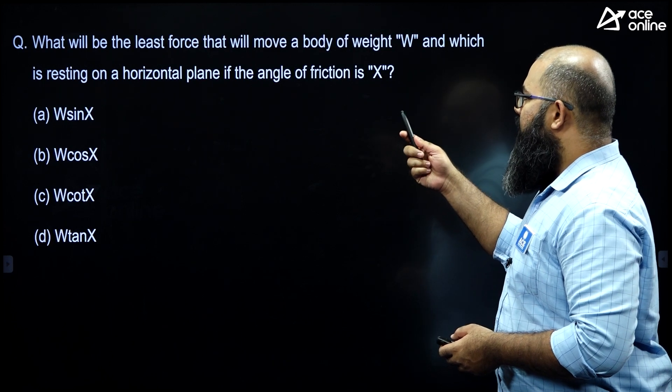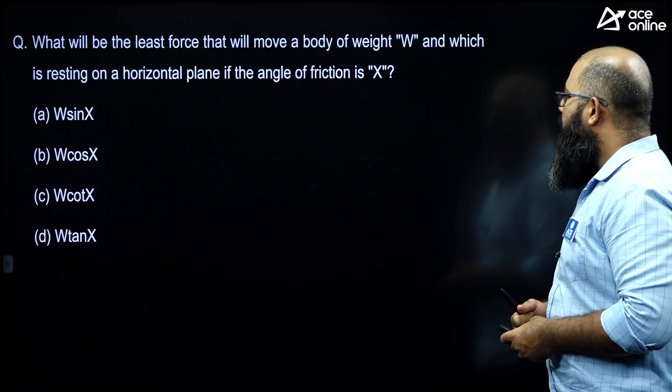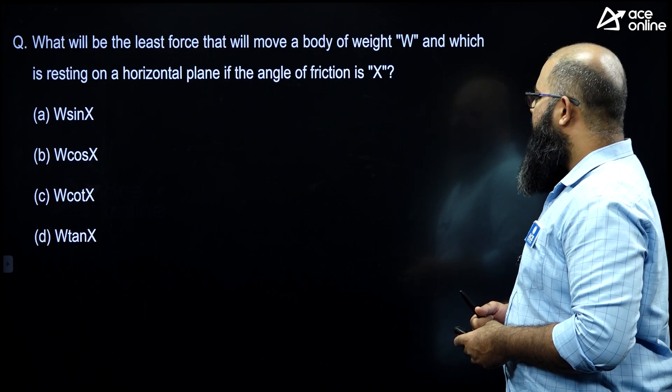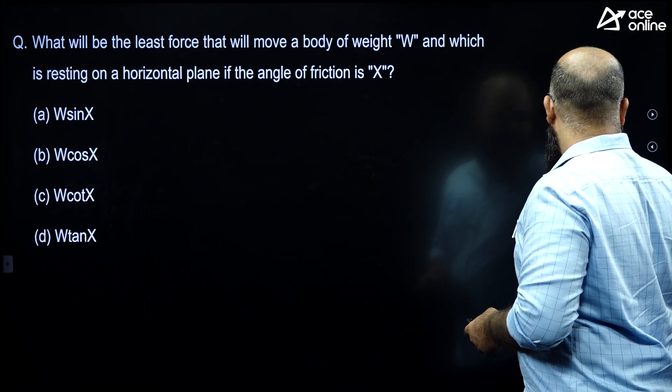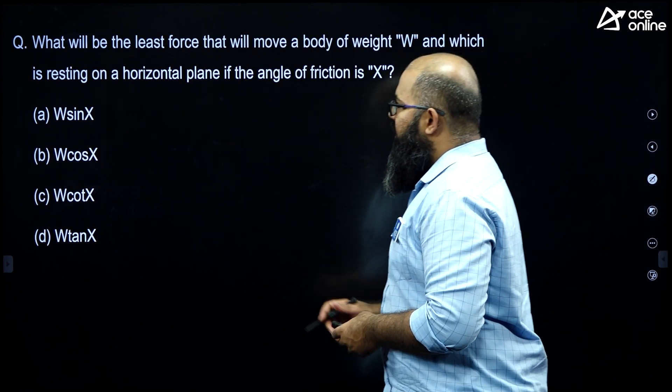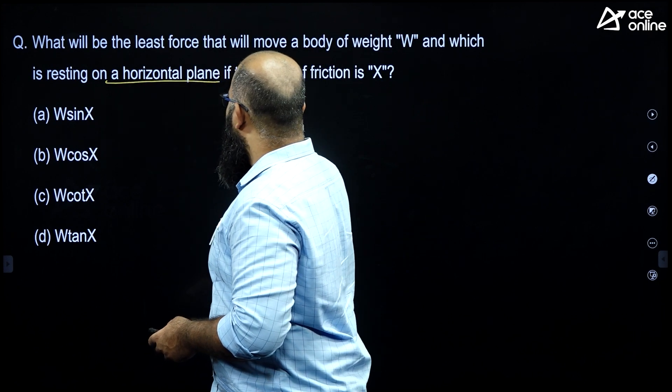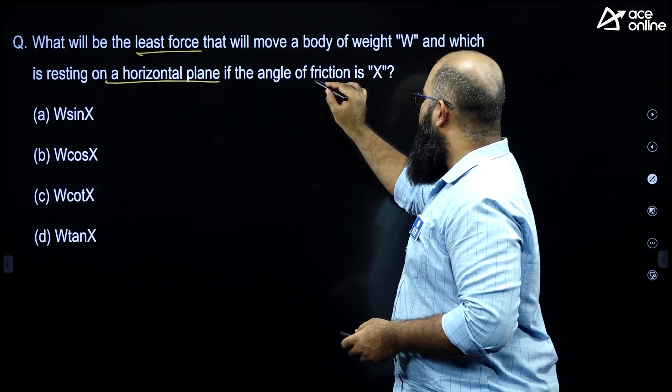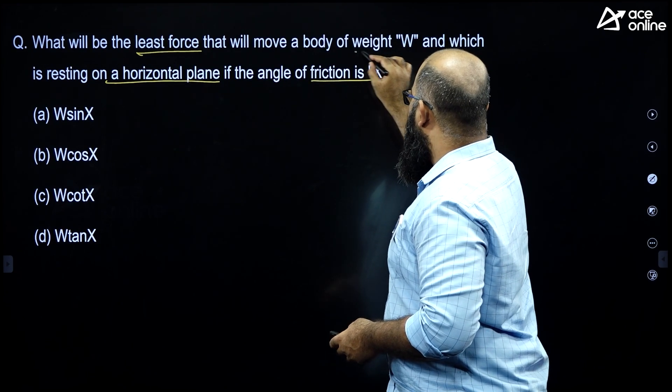The question says, what will be the least force that will move a body of weight W and which is resting on a horizontal plane if the angle of friction is given as X. The angle of friction is given as X. Now the question over here is, the body is resting on a horizontal plane, we need to find out least force. Angle of friction is X, the weight is W.